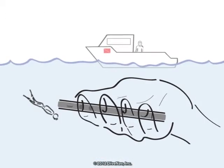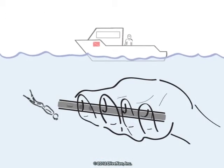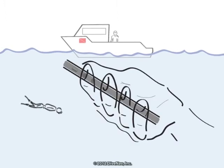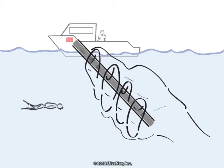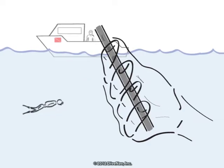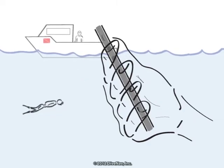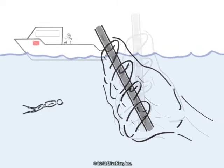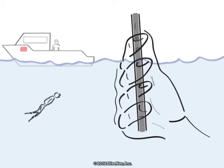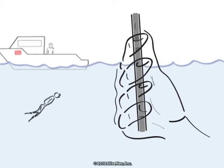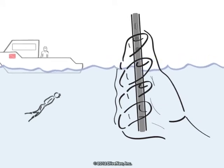To stop the descent, tilt the phone to the neutrally buoyant position — it is about 45 degrees. To ascend in the water column, just tilt the iPhone upward. And again, the more you tilt the iPhone vertically, the faster the diver will ascend.